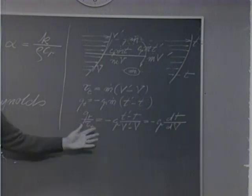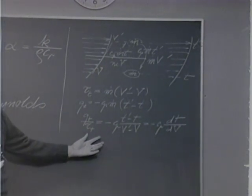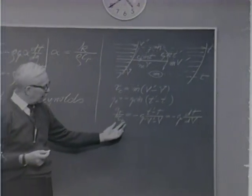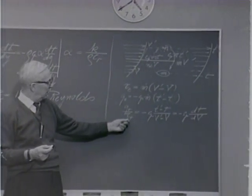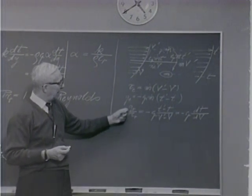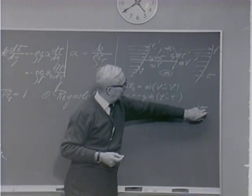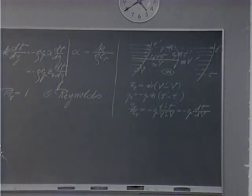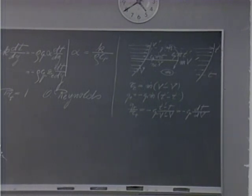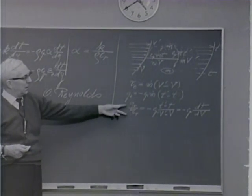The practical usefulness of this equation is the following: if from experiments we know the turbulent shear in a tube, then from this equation—since these are only time-averaged values—we can calculate the turbulent heat flux. This is essentially the answer which Osborne Reynolds obtained.